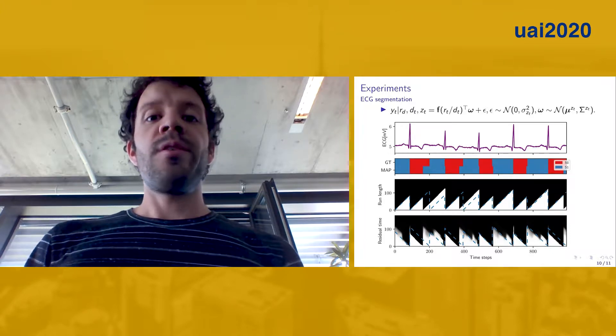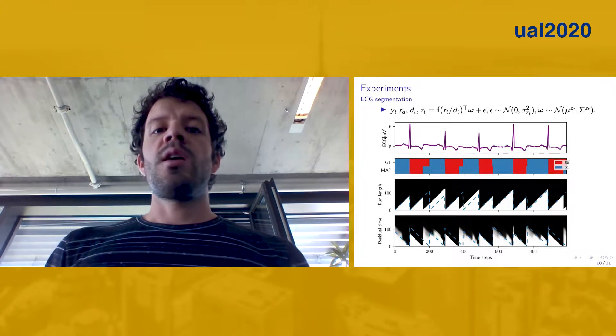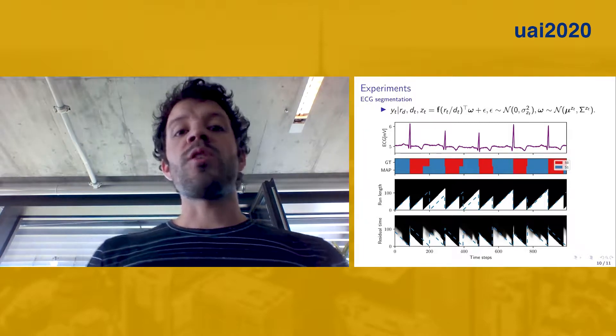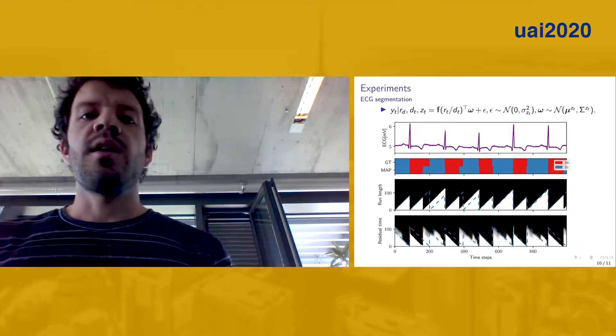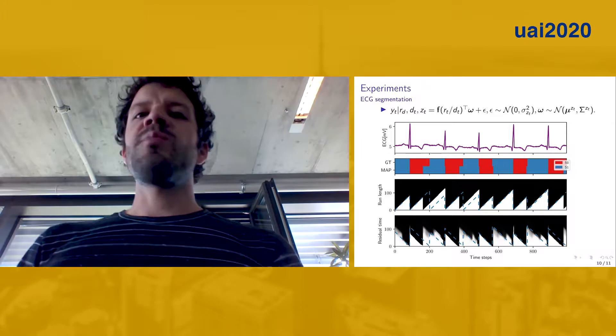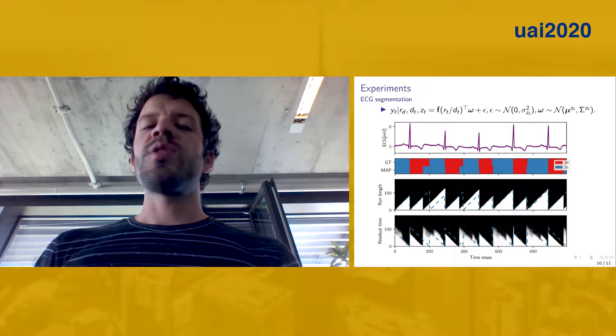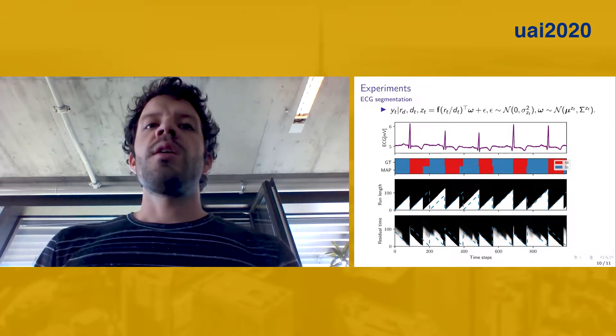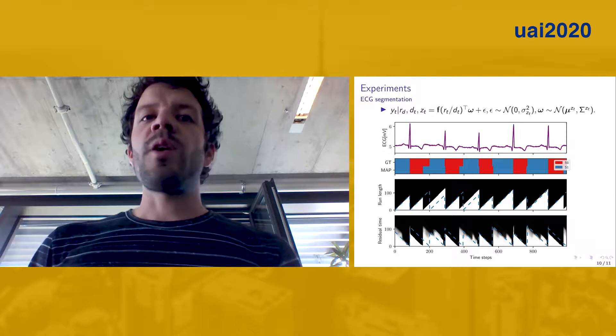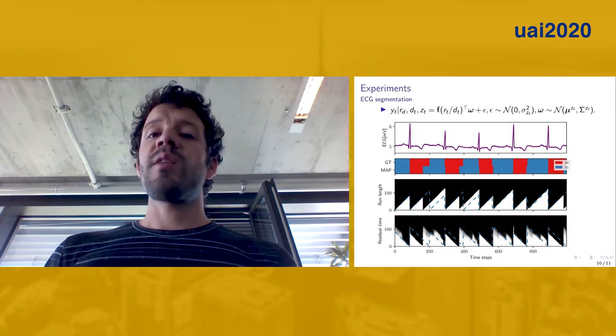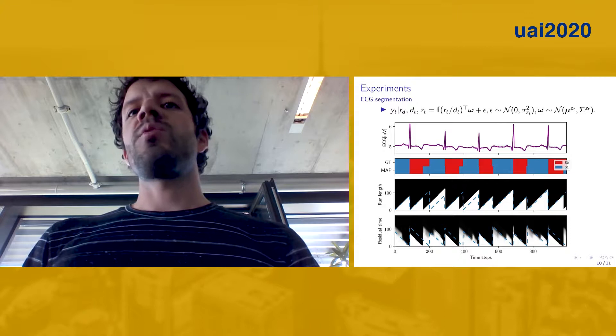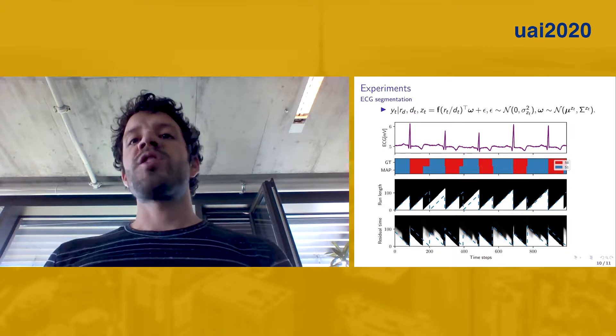In particular, note that the residual-time posterior is less uncertain, or in other words, is more peaked compared to the previous one, and we argue that this is the case because with a few observations, our framework can figure out the total time scale of the segment and therefore make more accurate predictions about when the next change point will happen.